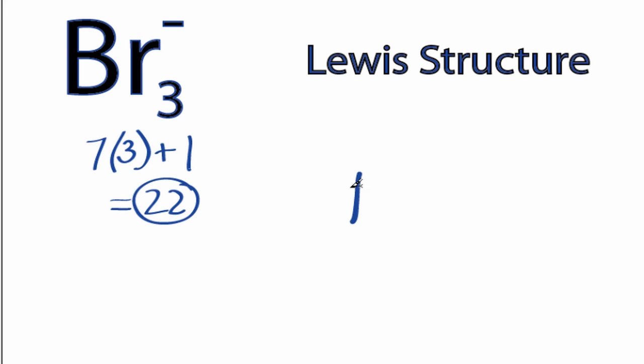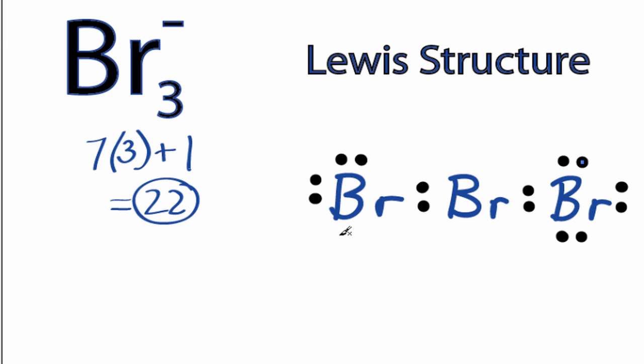We have 3 bromines, we'll line them up like this, and then we'll take the electrons, we have 22, and we'll place 2 electrons between atoms to form chemical bonds, and then we'll go around the outside atoms to fill their octets, so we have 2, 4, 6, 8, 16, and then back to the central bromine, 18 and 20.